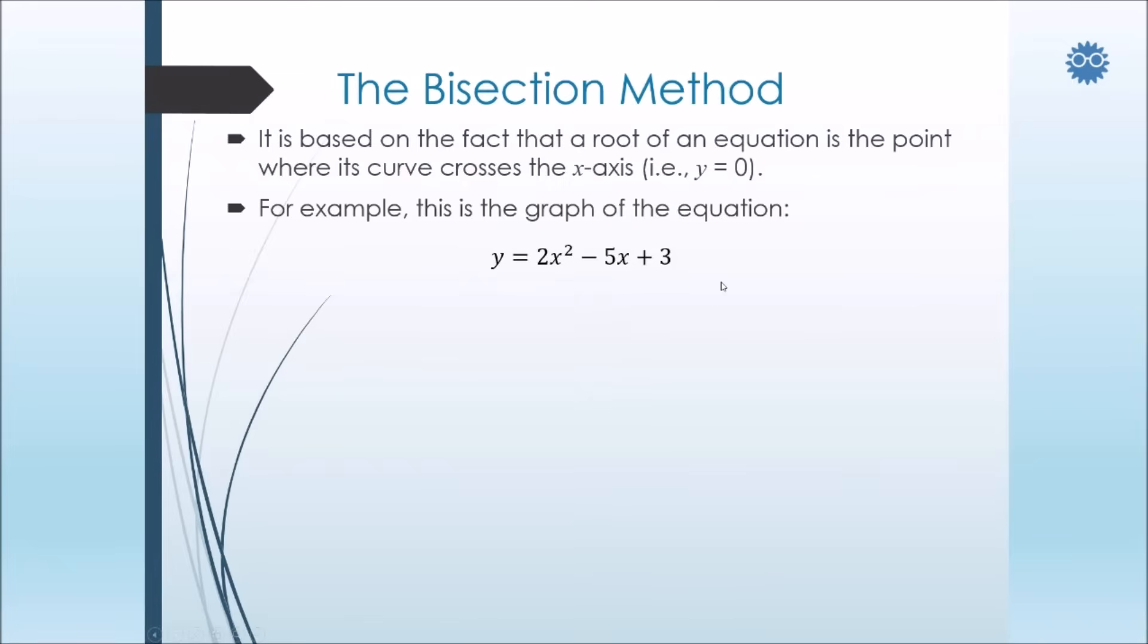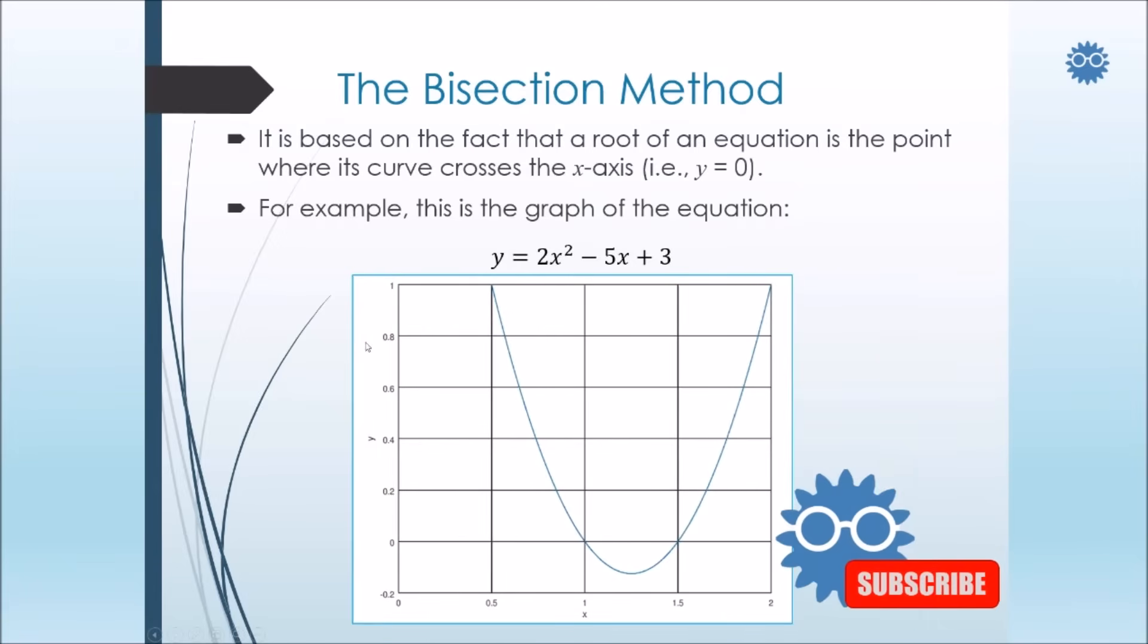The bisection method is based on the fact that the root of an equation is the point where its curve crosses the x-axis, in other words, when y is equal to zero. For example, this is the graph of the equation 2x² - 5x + 3. Now, we notice here that the curve of the equation crosses the x-axis at two points, which are the roots.